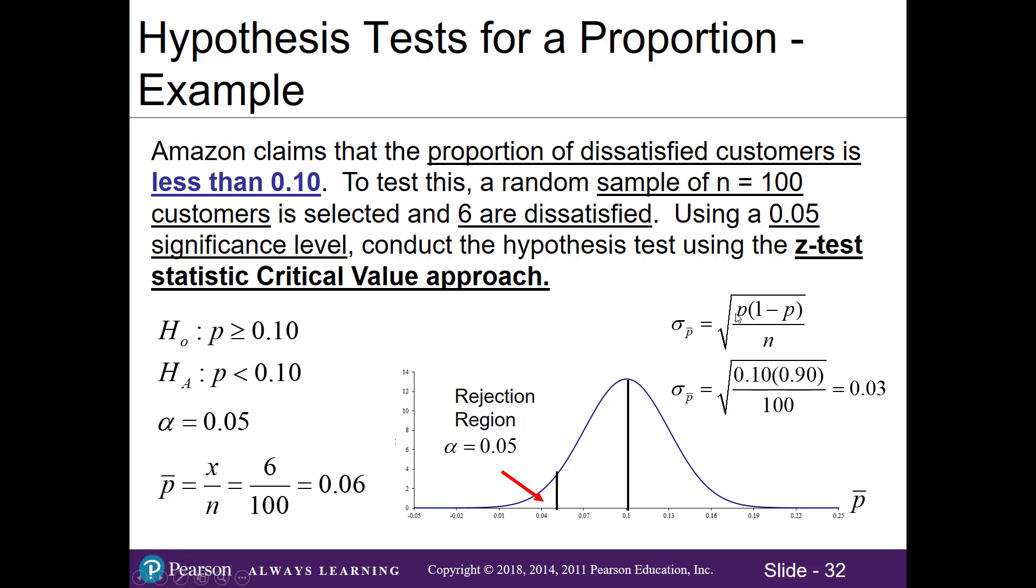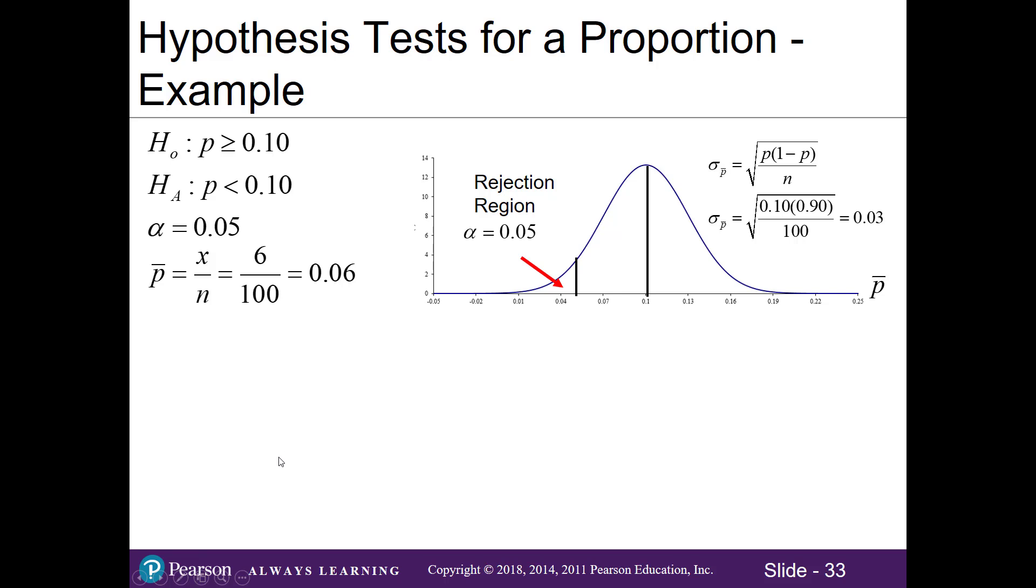Over here we also have our standard error, which is part of our formula when we are converting our sample proportions into a z value. Just bringing everything over, let's go ahead and start solving.